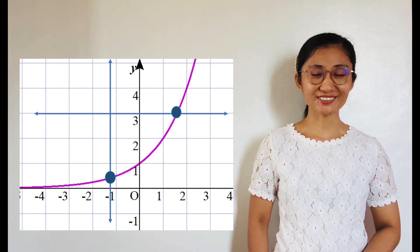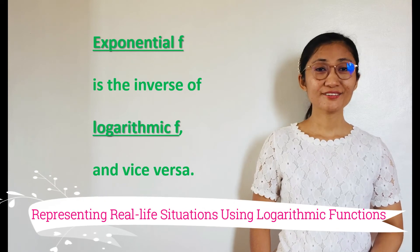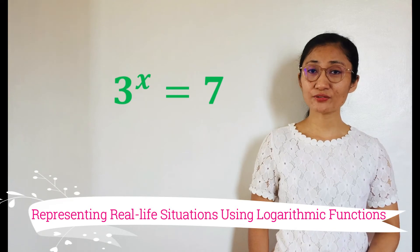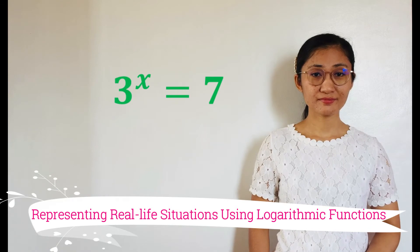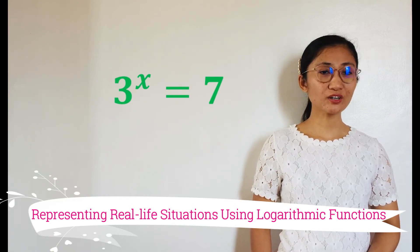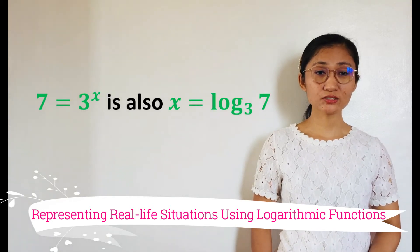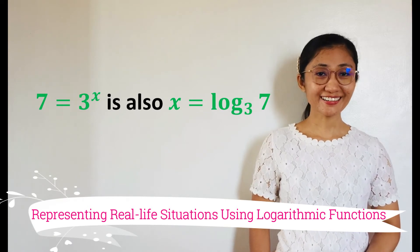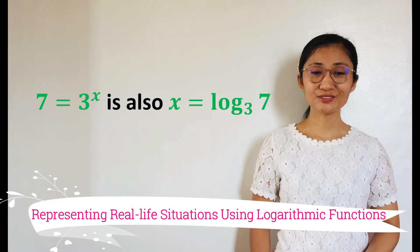Remember what an inverse function is? The inverse of an exponential function is a logarithmic function. There are exponential equations which cannot be solved easily. Suppose we have 3 to the x equals 7 — how can we express 7 in terms of 3? That's not easy. But in the world of logarithms, that is possible. So, 7 equals 3 to the x is also x equals logarithm of 7 to the base 3. That is read as x equals logarithm of 7 to the base 3.